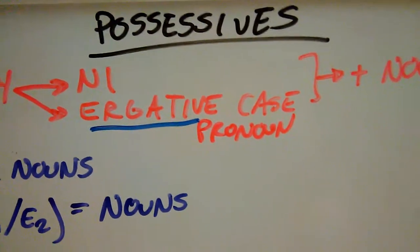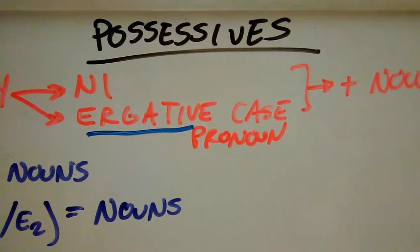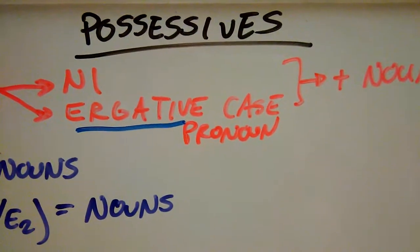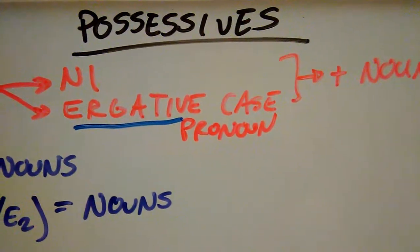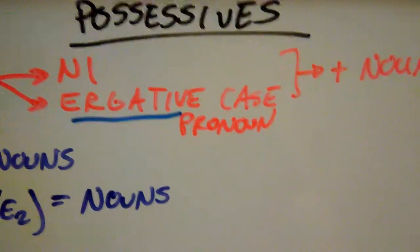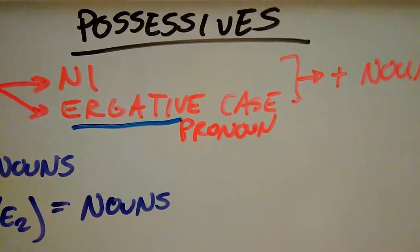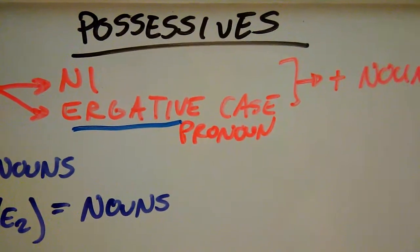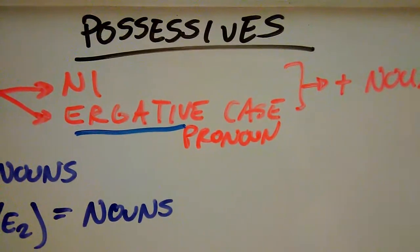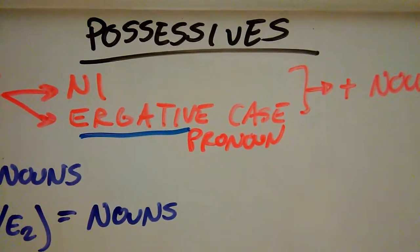If you remember what possessives are, they're the my, your, his, her — it's showing ownership of something. Or in English, it's like apostrophe S for something. Sometimes it's also 'of' — they use that preposition, but I'm going to talk about that in another video. This one is just possessive ownership.